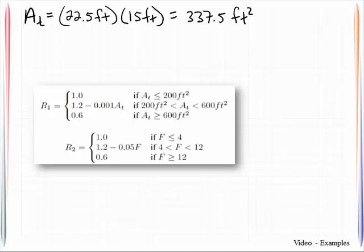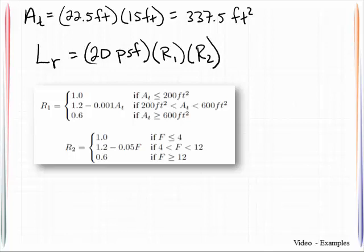Next thing is we need to identify the roof live load equation. That is given to us, L sub R, as being 20 pounds per square foot, multiplied by a reduction factor R1 and a reduction factor R2. And these are given to us as per ASCE7.